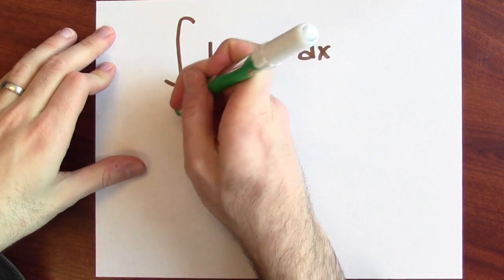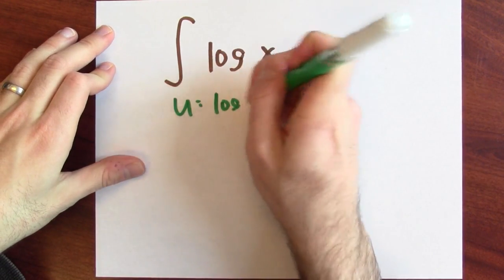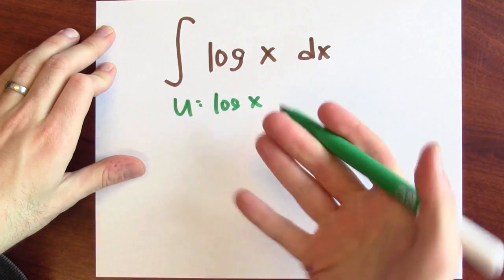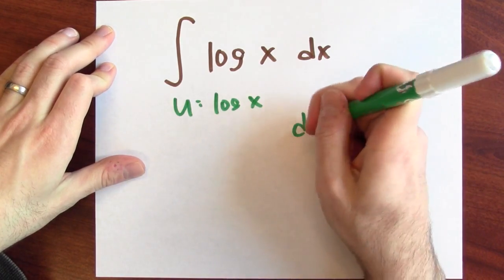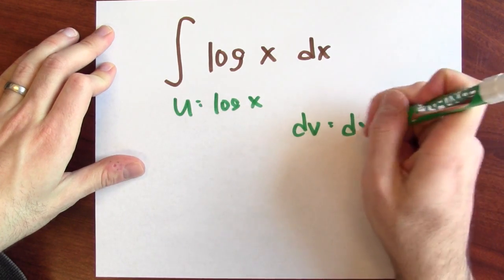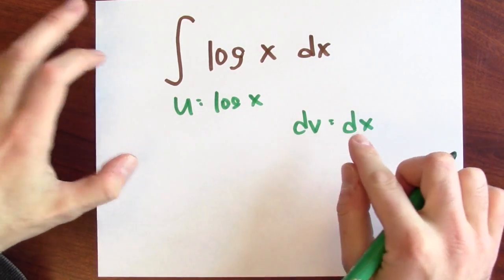The trick is to set u = log x, that's the part of the integrand I'm going to differentiate, and then set dv to be dx, which I think is quite surprising. And that helps.